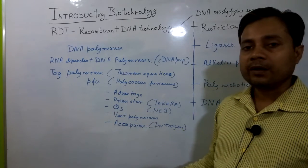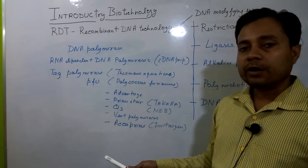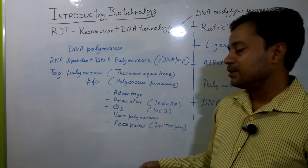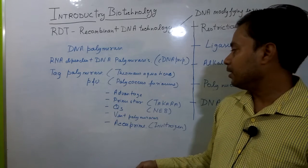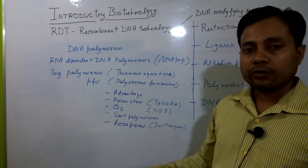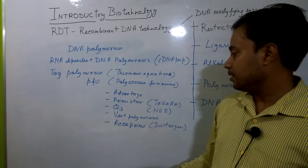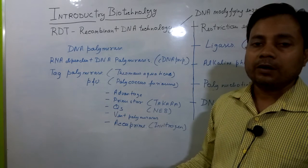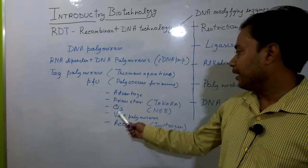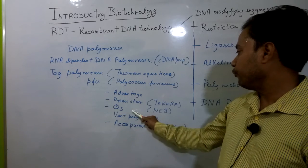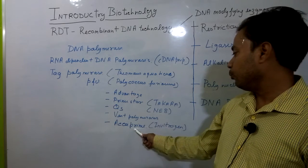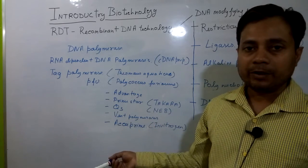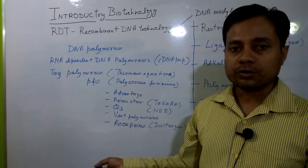Nowadays many Taq polymerases are available from different sources — popular ones include Vent polymerase. According to advances in biotechnology, other enzymes have been engineered with different abilities like better priming and long-strand DNA synthesis. Several companies offer engineered enzymes such as Advantage and PrimeStar from Takara, Q5 from NEB, and Accuprime from Invitrogen — each with their own engineered ability to synthesize DNA molecules in a better way.